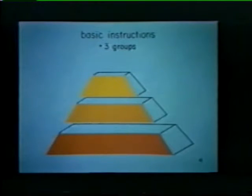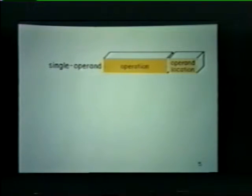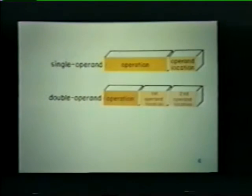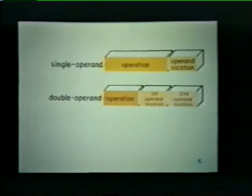The first group consists of single operand instructions. The instruction word is divided into two parts. The first part specifies the operation or job to be performed by the instruction. The second part provides information which enables us to locate the operand. The second group consists of double operand instructions. The prime difference is that this group deals with two operands rather than one. The first part of the word specifies the operation, and the second and third parts provide information allowing us to find the first and second operands.